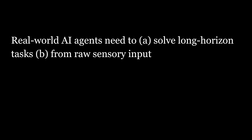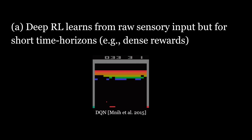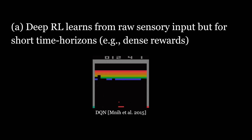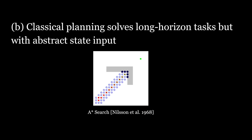To operate effectively, real-world agents need to solve long-horizon tasks from raw sensory input, such as images. Over the last few years, deep reinforcement learning algorithms have been able to learn effective policies from images, but only for tasks with short time horizons. On the other hand, classical planning methods like A* search can solve long-horizon tasks but require an abstract state space, which is unavailable in most real-world settings.